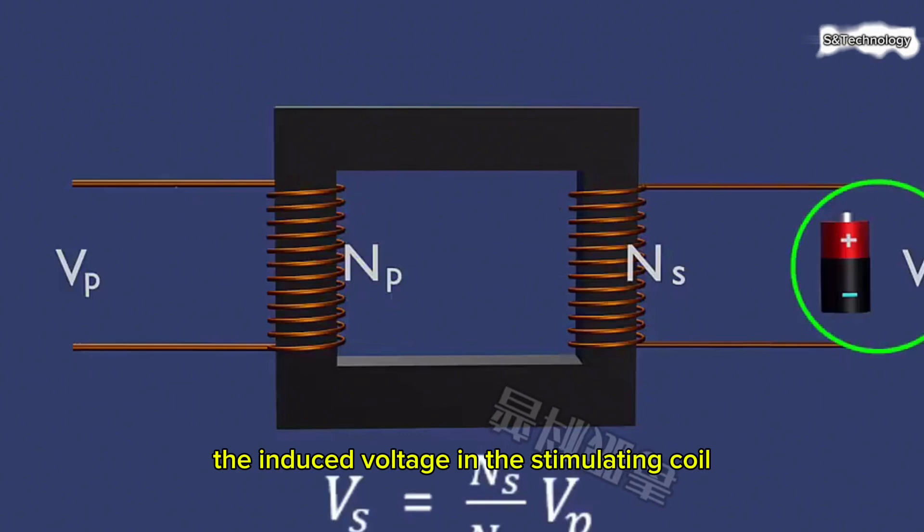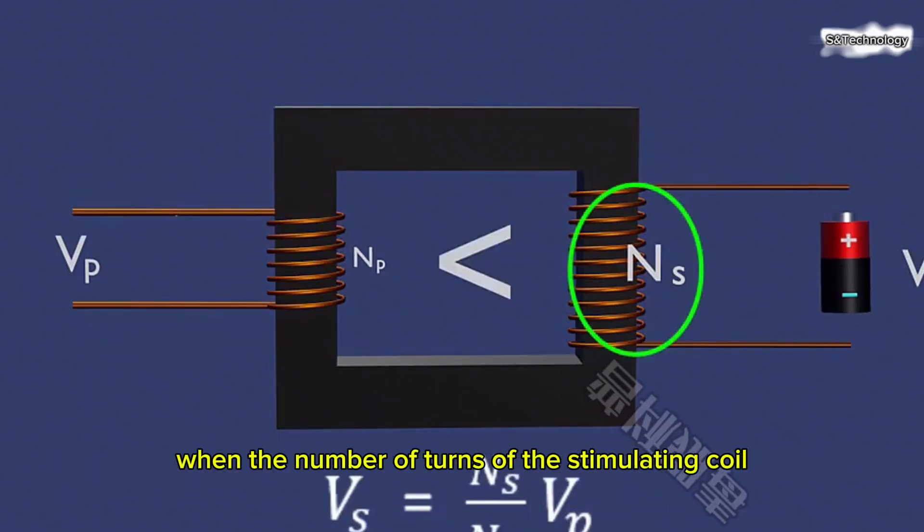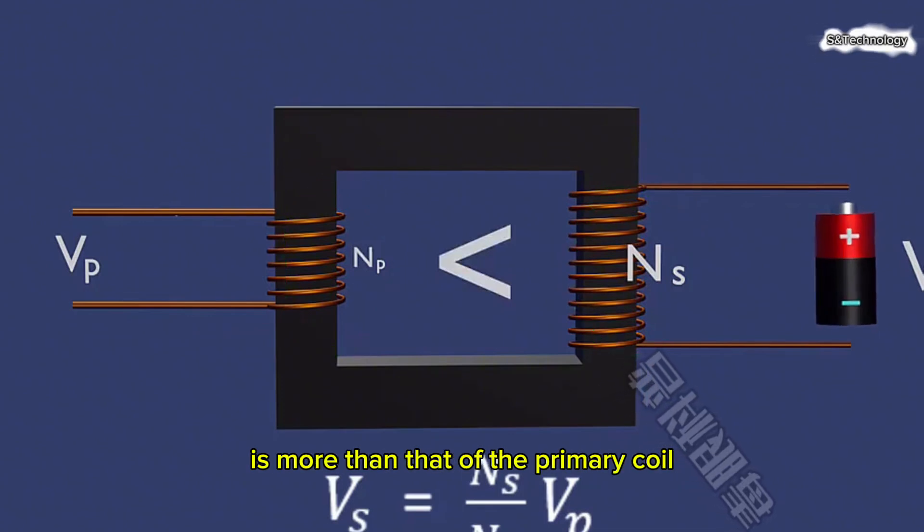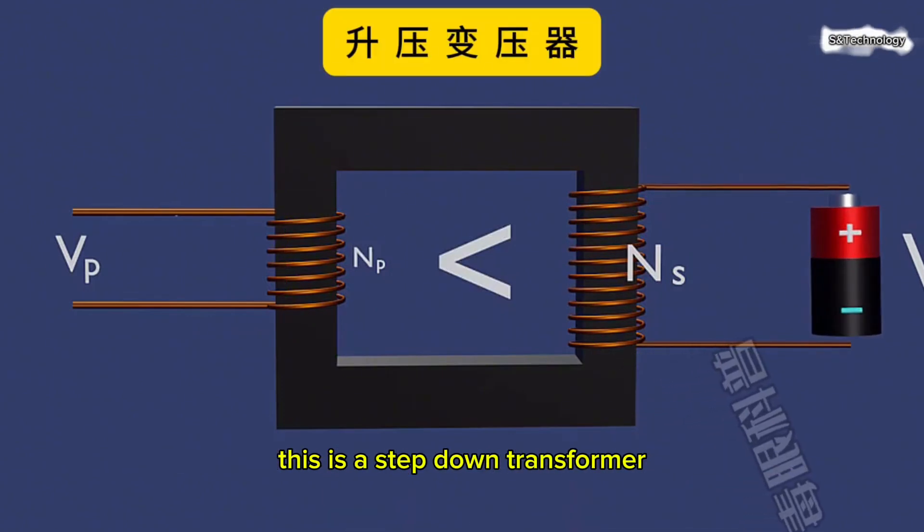The induced voltage in the secondary coil depends on the ratio of the number of turns of the primary and the secondary coil. When the number of turns of the secondary coil is more than that of the primary coil, the induced voltage of the secondary coil will be higher. This is a step-up transformer.